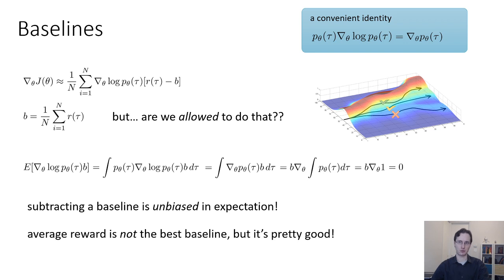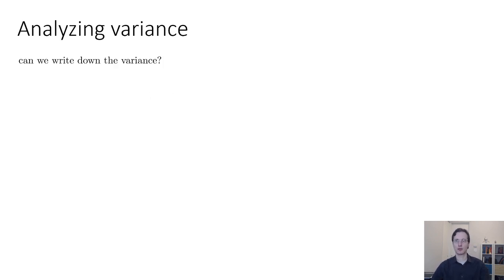The average reward, which is what I'm using here, turns out to not actually be the best baseline, but it's actually pretty good. In many cases when we just need a quick and dirty baseline, we'll use average reward. However, we can actually derive the optimal baseline. The optimal baseline is not used very much in practical policy gradient algorithms, but it's perhaps instructive to derive it just to understand some of the mathematical tools that go into studying variance. So in the next portion, we'll go through a mathematical calculation to derive the expression for the optimal baseline to optimally minimize variance.